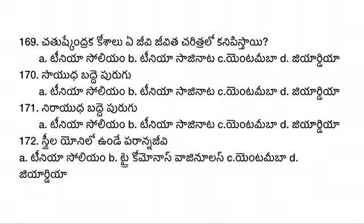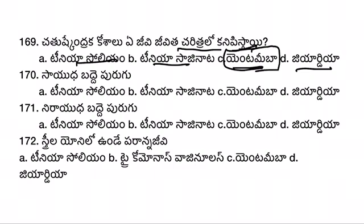The next question involves the tetranucleate stage or quadranucleate stage in the life cycle. The options include Taenia solium, Taenia saginata, Entamoeba, and Giardia. Entamoeba has a tetranucleate cyst stage in its life cycle — with quadranucleate and tetranucleate stages being relevant.